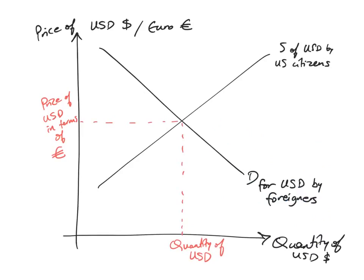So what does that look like on a diagram? Basically you would draw the price of the currency — here I'm drawing the price of the US dollar, that's the currency I'm studying — in terms of another currency; I chose the euro here. The quantity would be the quantity of US dollars, because I'm looking at the market for US dollars. The demand for US dollars would be coming from foreigners — in this case Europeans — that would like to buy American goods and services, travel to the United States, or save or invest in the United States. The supply of US dollars would be coming from US citizens and residents that wish to buy goods and services from overseas, travel overseas, or save or invest overseas.